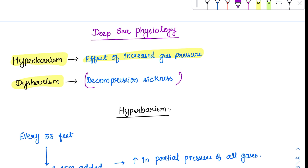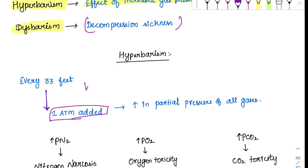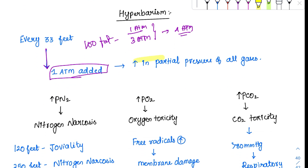Let's understand what happens when a person goes deep into the sea. For every 33 feet underwater, there is an increase of 1 atmospheric pressure. If he goes 100 feet, for example, there will be 3 atmospheres contributed by the water and 1 atmosphere above sea level — so the total will be 4 atmospheres. At 4 atmospheres, all the gases are in a compressed state and cause severe problems, with all partial pressures increased.